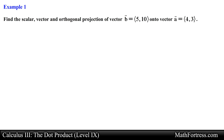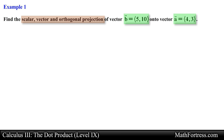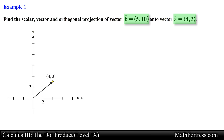Find the scalar, vector, and orthogonal projection of vector b onto vector a. Here we are given two planar vectors and we are asked to find the scalar, vector, and orthogonal projections of vector b onto vector a. Let's go ahead and draw these two vectors in a Cartesian coordinate plane so that we can visualize the problem.